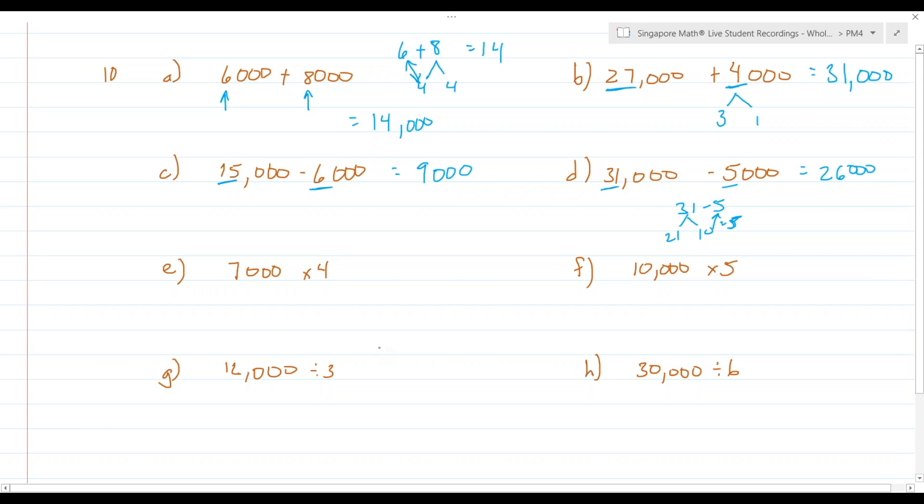a couple of samples of those. If you have 7,000, 4 times, 4 times 7 is 28, so you have 28,000. It's almost like 1,000 is a unit. 10,000 times 5 is 20,000.